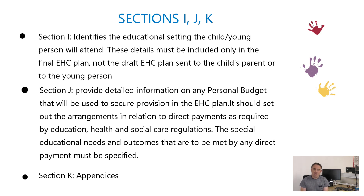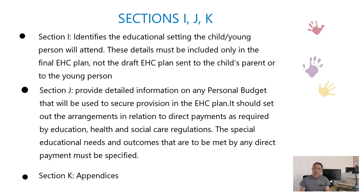Section J of the education, health and care plan details the personal budget to be provided where it's allocated — the amount of money will be specified and a description of the provision and outcomes it's targeted to meeting will be included. Section K, last but not least, is the appendices to the EHC plan — these comprise all the advice gathered as part of the EHC needs assessment, broken down into section K. They will include the advice from parents, the advice from the school, the advice from the educational psychologist, and the advice from health and social care.